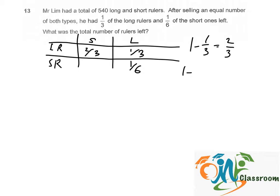And we do that for short rulers: one minus one sixth. That means he must have sold five sixths of the short rulers. And as we can see from the question, after selling an equal number of both types, that means two thirds of the long rulers is equal to the same number as five sixths of the short rulers. Now we can draw the model.